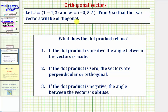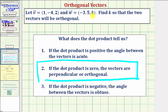Because we want our vectors to be orthogonal, we know the dot product must equal zero. To find the value of k, we'll set up the dot product, set it equal to zero, and solve for k.